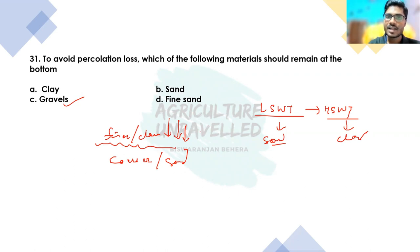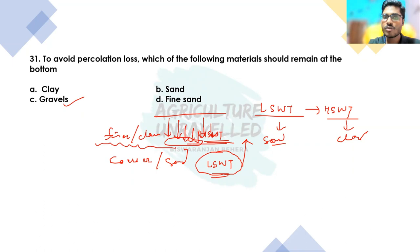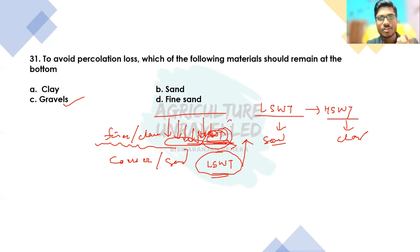Coarse texture soils like sand or gravels have lower soil water tension compared to clay or heavy texture soils, which have higher soil water tension. In this case, the top layer has higher soil water tension — the finer materials — and the bottom layer, the coarser materials, has lower soil water tension. Water always moves from lower to higher soil water tension, so when we add water to the top layer, water will not move to the bottom layer due to this tension difference.